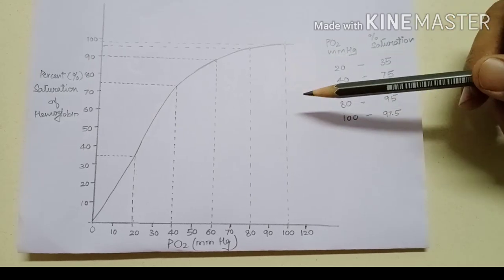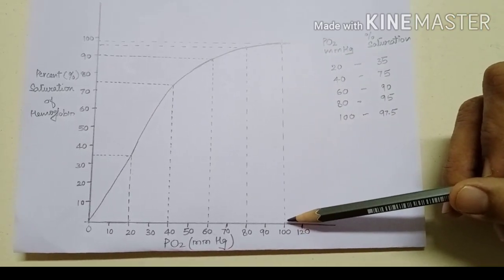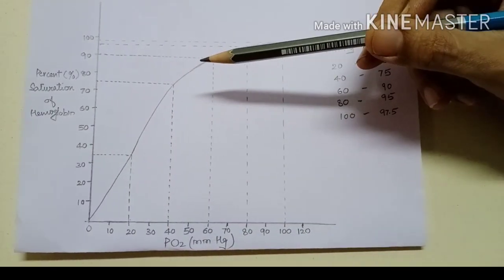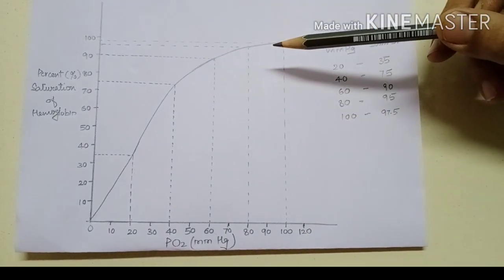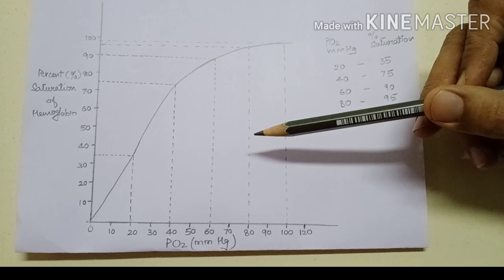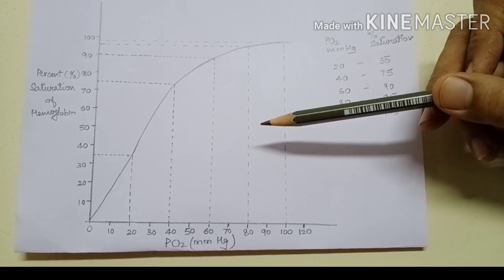Because oxygen uptake by the pulmonary blood is not affected in spite of changes in PO2. PO2 falls from 100 mmHg to 60 mmHg, but percentage saturation falls only 10%.